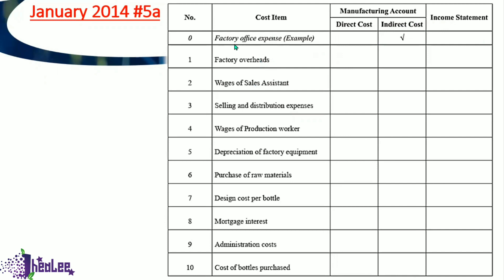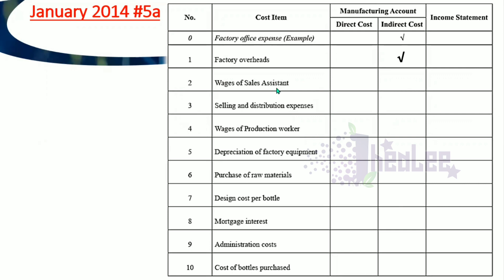The first item, factory office expense, is an indirect cost — a factory overhead. Number one, factory overheads — definitely indirect costs. Wages and salaries of sales assistant falls under selling and distribution, found in the income statement. Wages of production worker is directly linked to the item being produced — that is a manufacturing account item, specifically a direct cost. Depreciation of factory equipment is part of the manufacturing account but is an indirect cost — a factory overhead item.